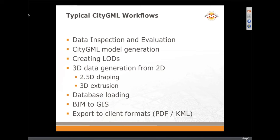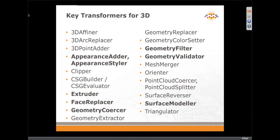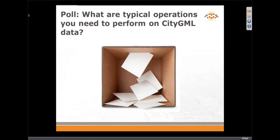Dave will show you a few workflows in terms of writing CityGML. As mentioned, going from 2D to 3D — a big part of that workflow will be writing out the various surfaces for LOD zero or the landscape, and then extruding to 3D for things like buildings. I'll review the key transformers for supporting 3D later.